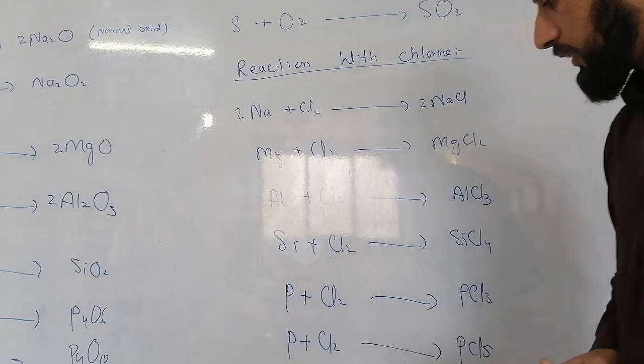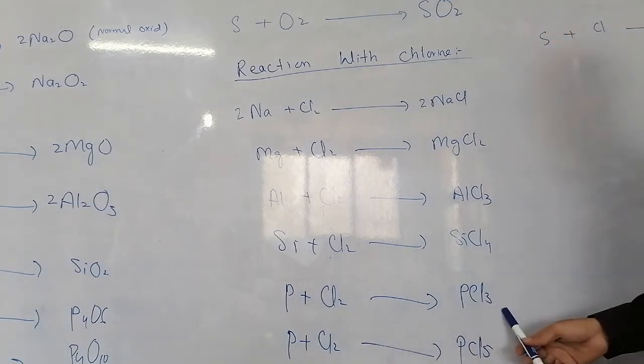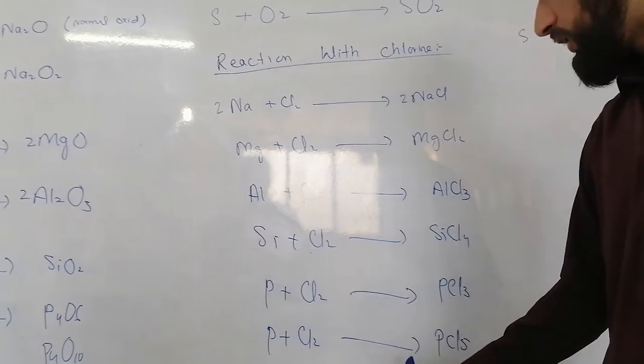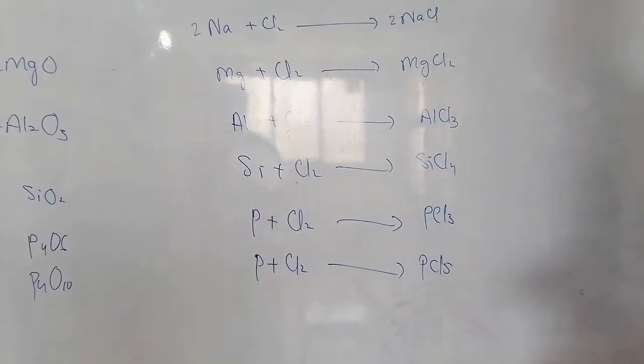Phosphorus with chlorine to react gives phosphorus trichloride. Phosphorus with chlorine to react gives phosphorus pentachloride.